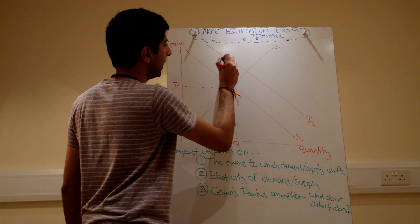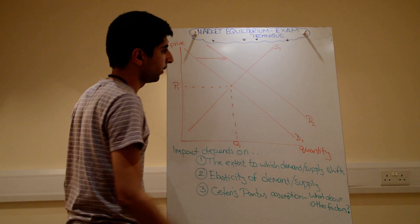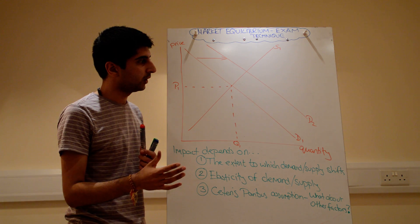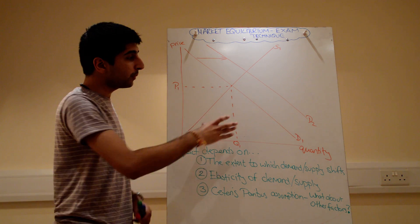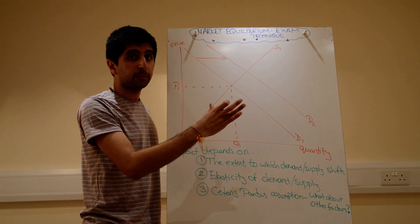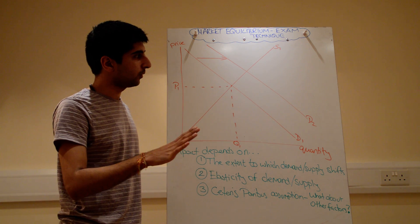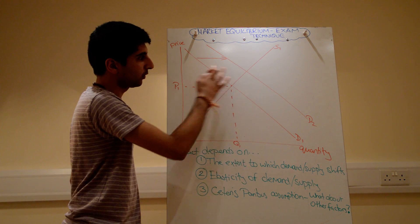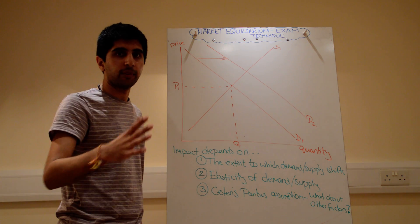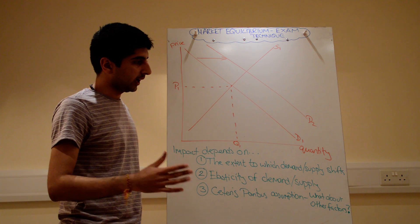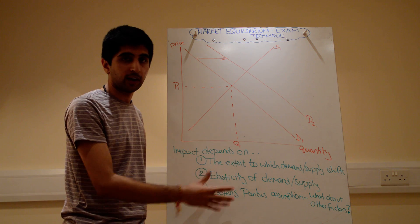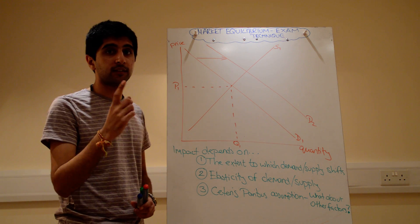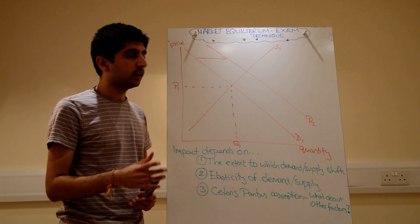Indicate that by the right arrow. If that was the only thing that happened — if there was no effect on supply at all — you would draw an increase in quantity and an increase in price and stop there. Then you would start your analysis and your evaluation. But obviously there's a simultaneous effect on supply.